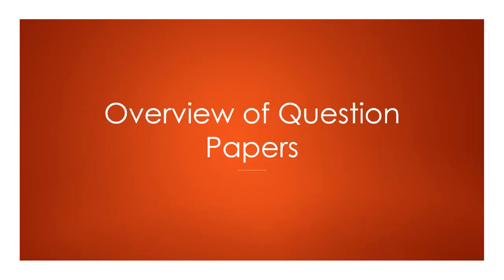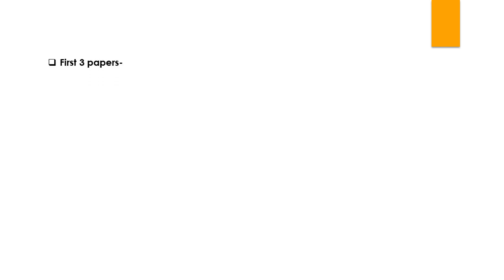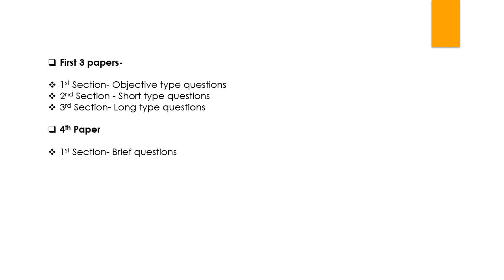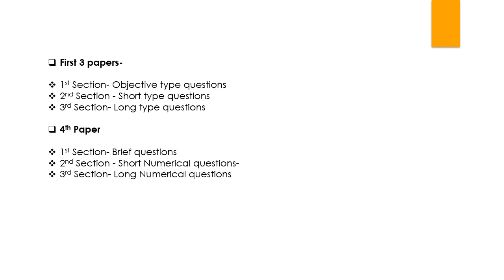The first three books are primarily important for the energy manager exam. The fourth book is important for the energy auditor exam, but even energy manager exam candidates can refer to it for numerical preparation. The first three papers each have three sections: objective type questions, short type questions, and long type questions. The fourth paper also has three sections: brief objective questions, short numerical questions, and long numerical questions — so preparation for the fourth paper is heavily focused on numericals.